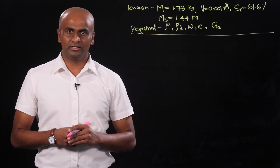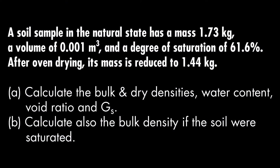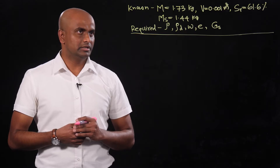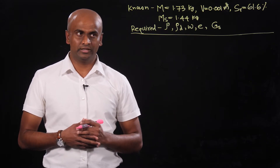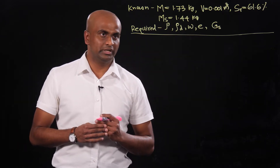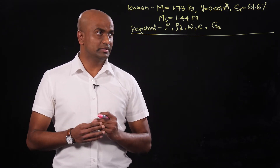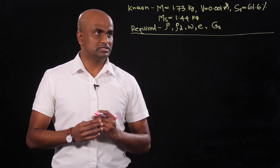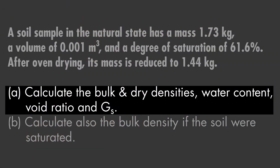We are going to look at question number four of the Pace relationship problem set. This question describes a soil sample and some measurable quantities are given. It is a good idea to write down all the known information as well as what you need to calculate, to save time. The total mass, volume, degree of saturation, and mass of solid are given. You are asked to calculate bulk density, dry density, moisture content, void ratio, and specific gravity of the soil.